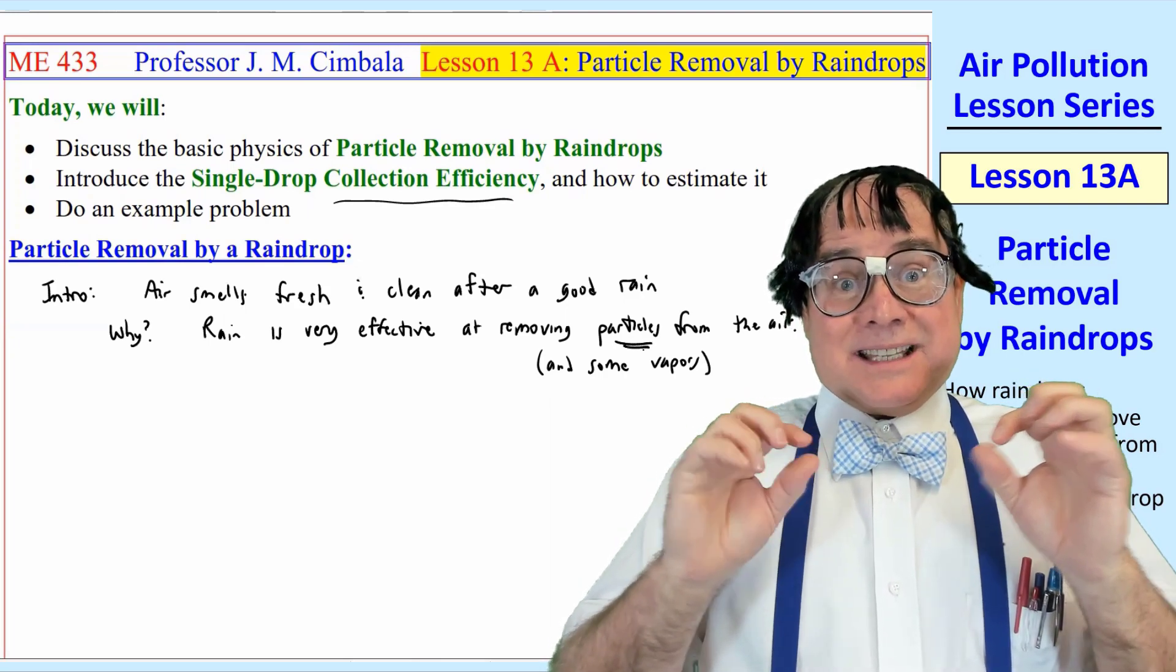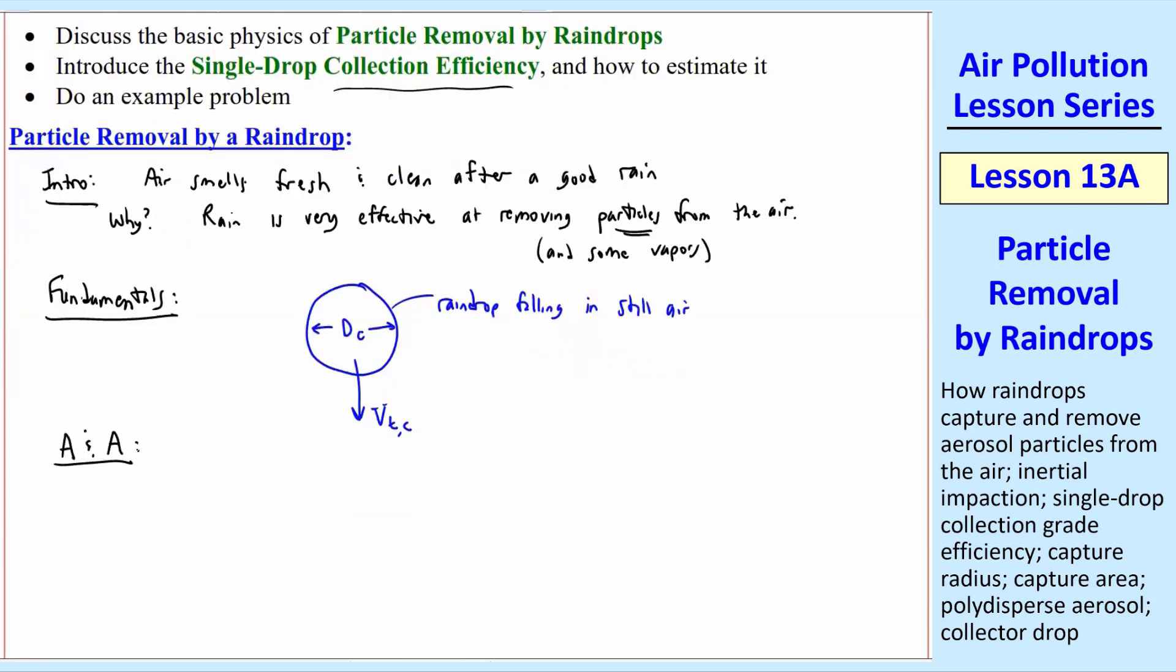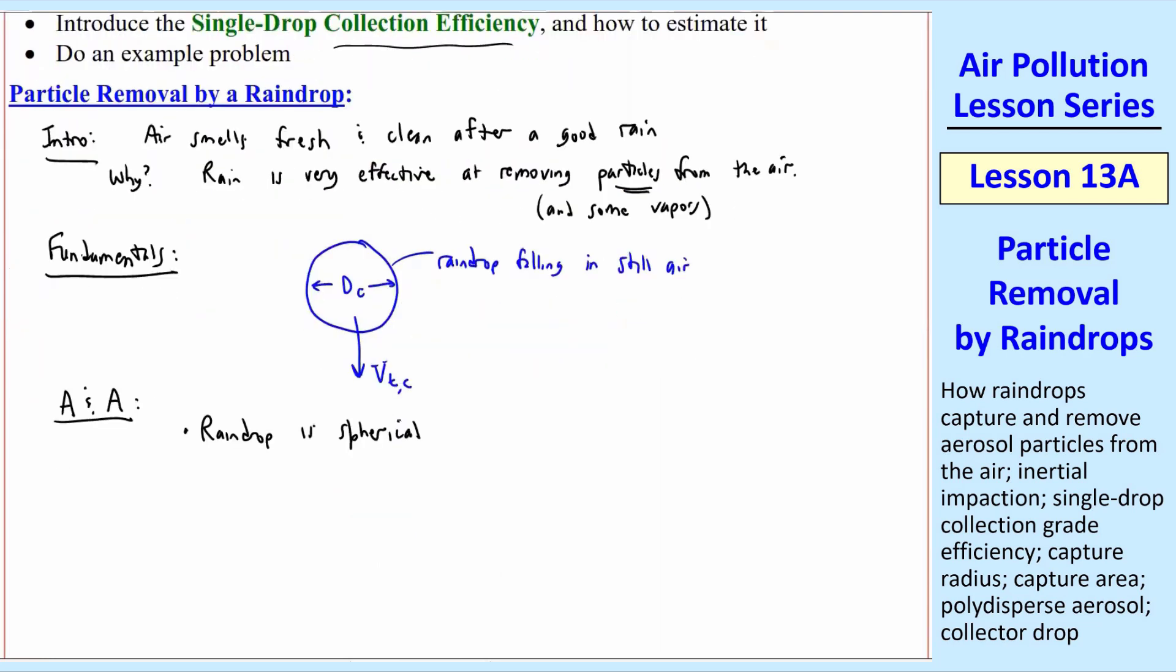So some fundamentals. Let's consider a single raindrop of diameter DC that's falling in still air. So it's going to fall at some speed, terminal settling speed, VTC. The air is quiescent or still. Let's list some approximations and assumptions. First, we'll assume that the raindrop is spherical, where the diameter is DC as I drew. The C stands for collector, because this drop is collecting particles from the air.